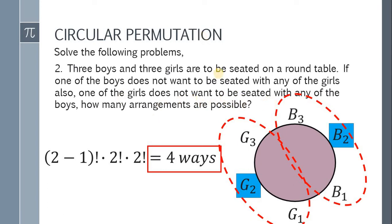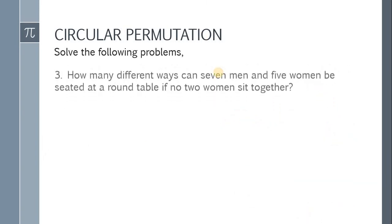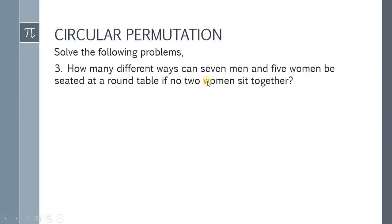Now, let's move on to question number three. Question number three. How many different ways can seven men and five women be seated at a round table if no two women sit together? Sa ganito klase ng senaryo, kailangan gumawa tayo ng illustration.